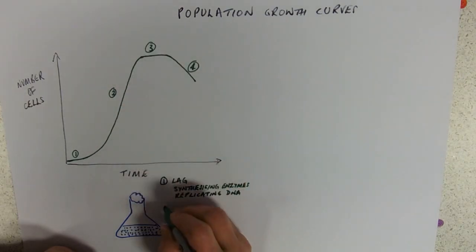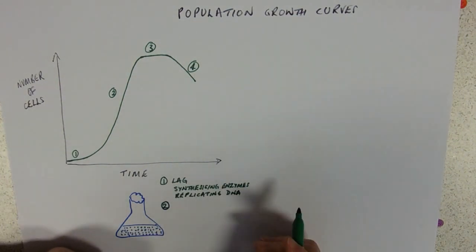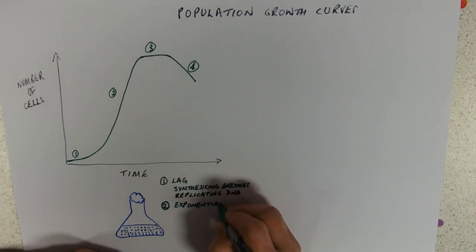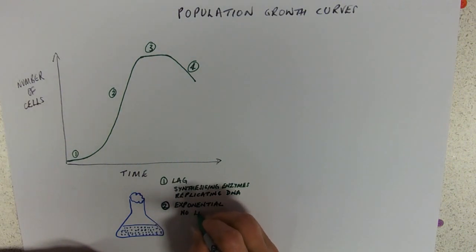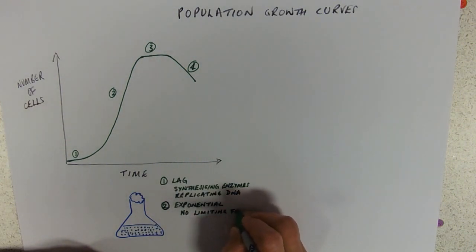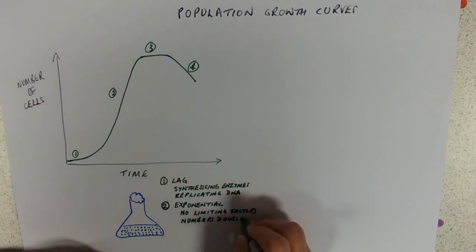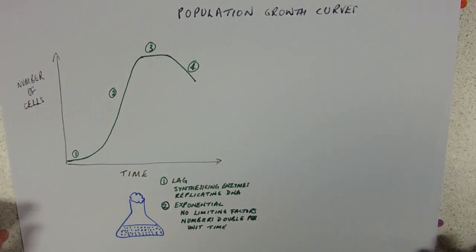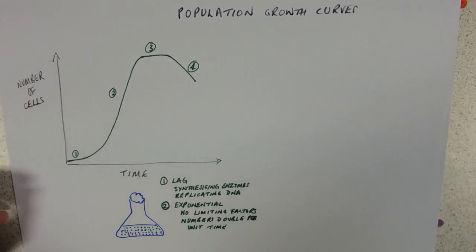We then go into phase two. You'll see this called the log phase, but I think that's confusing because lag and log sound similar, so I think you should stick to exponential. In the exponential phase, if you've got very few bacteria, they've all got loads of nutrients, so there are no limiting factors on growth. Their numbers double per unit time — so if at one hour you've got 100, after two hours you'll have 200. It's that simple a relationship.